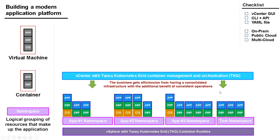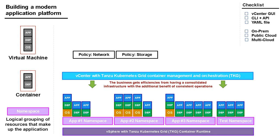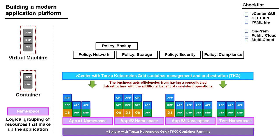Once we've got that sorted out, we can start applying policies across the board — policies that apply to everything underneath, whether it's a virtual machine, a container, or the namespace itself. We can have policies for network, storage, security, compliance, backup, DR, and role-based access control.